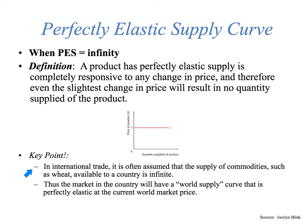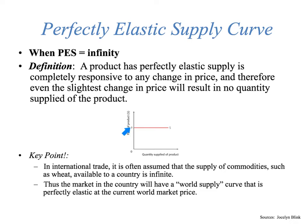You might think this doesn't happen, but actually it does. In international trade, it's often assumed that the supply of commodities such as wheat available to a country is infinite. Thus, the market will have a world supply curve that is perfectly elastic at the current world market price. If you're a single supplier and try to change the price of wheat, there's so much wheat available in the international market that someone will find it at a lower price. So all suppliers must charge the same price. Perfectly elastic supply does actually exist.